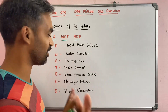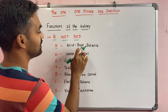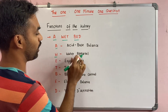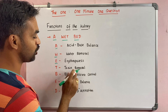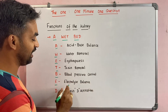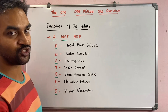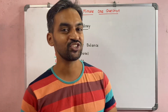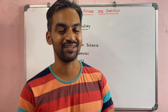WET BED stands for: W — water removal, E — erythropoiesis, T — toxin removal, B — blood pressure control, E — electrolyte balance, D — vitamin D activation. That's an easy way to remember all the functions of the kidney using the short trick WET BED.